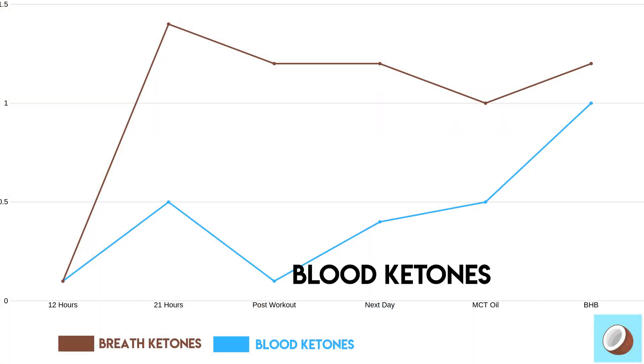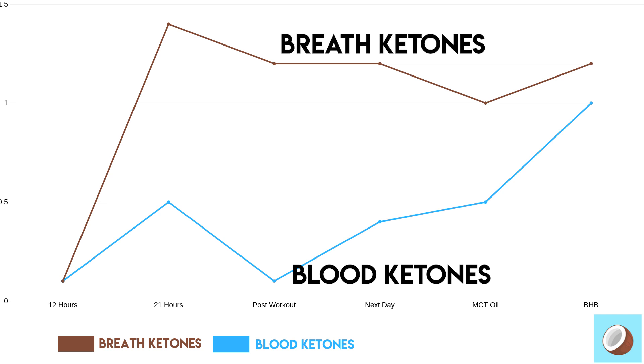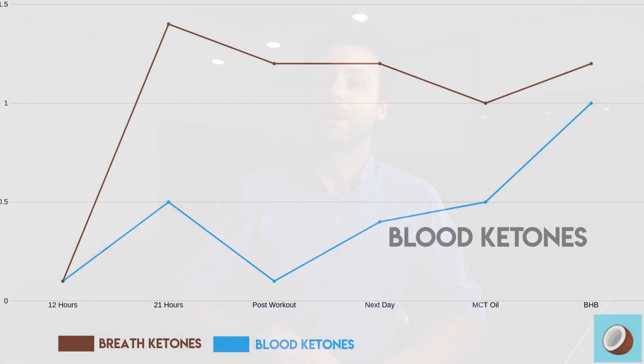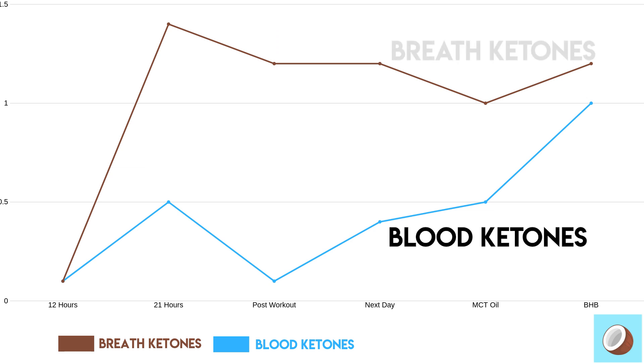One hour later, I did a workout while still fasted and measured post-workout. Blood ketones were at 0.1 millimoles, my breath ketones were at 1.2 millimoles, and my blood glucose was at 5.4 millimoles or 98 milligrams per deciliter. The workout included some high intensity intervals, which is the reason why my glucose was up and my blood ketones were down. But interestingly, my breath ketones stayed in the same range. So the next day, I tested my blood ketones at 0.4 millimoles and my breath ketones at 1.2 millimoles, with my blood glucose at 4.7 millimoles or 84 milligrams per deciliter.